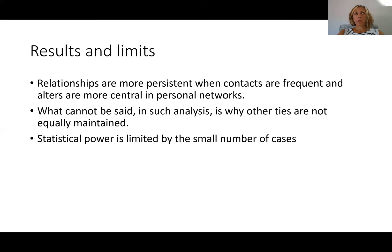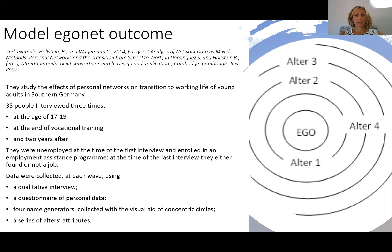Most importantly, in such analysis we model our hypothesis against the null hypothesis — for example, that we expect relationships with more central people to be more persistent. But what cannot be said is why other ties are not equally maintained. To overcome the limits of both statistical power and the limits of what can be said about these models, I'm going to present a second study — Bettina Holstein and colleagues' study on the effects of personal networks on the transition to working life of young adults in southern Germany.